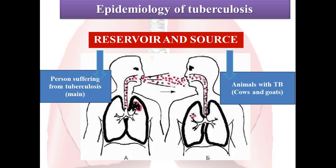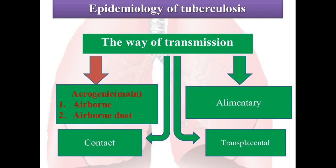Regarding the ways of transmission, there are the following routes: aerogenic — which consists of airborne and airborne dust sub-routes — alimentary, contact, and transplacental ways.